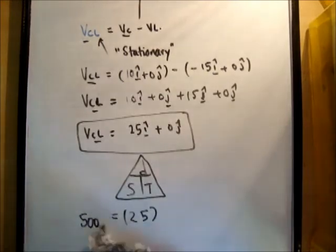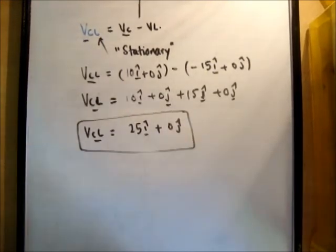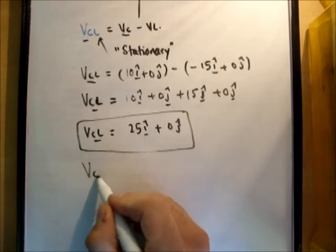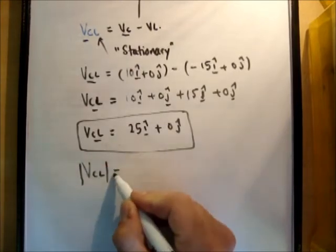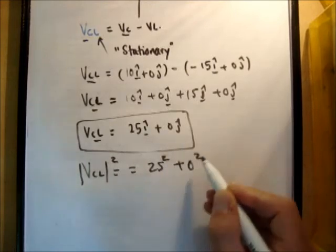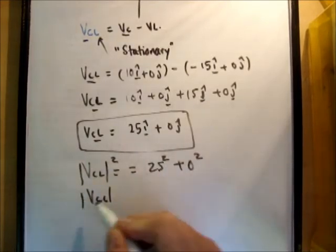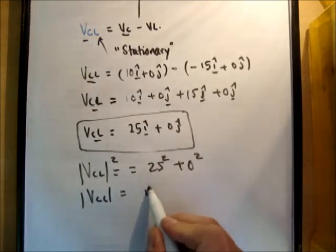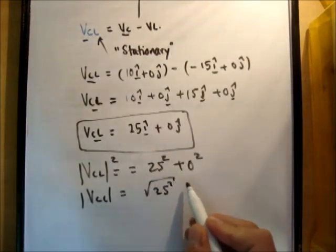Actually before I do that, excuse me, I just want to make one part clear. We need to find the magnitude of VCL. So the magnitude squared is equal to 25 squared plus 0 squared. So VCL is equal to root 25 squared equals 25.